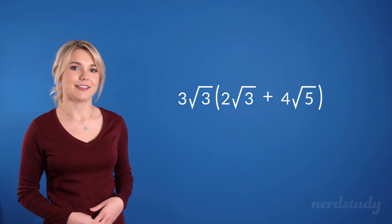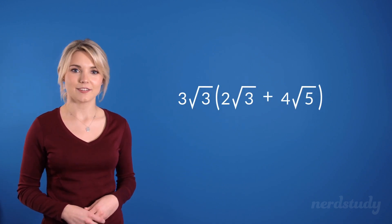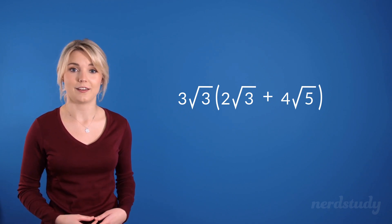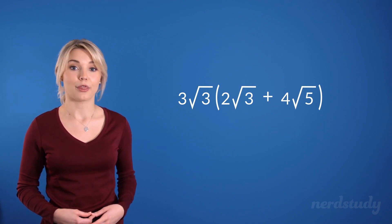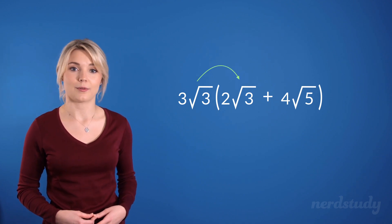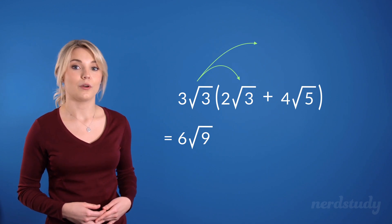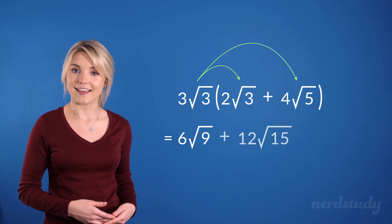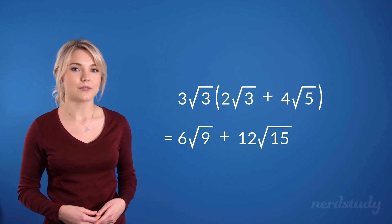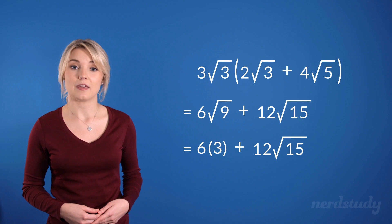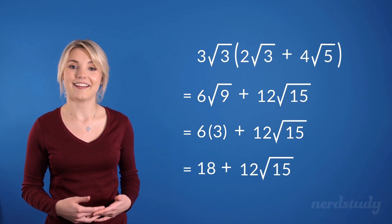So to finish this lesson off, let's try one last example together. Here is our example. In a situation like this, all we need to do is to use the distributive property as we normally would. So we multiply 3 root 3 with 2 root 3 to get this. And then we multiply 3 root 3 with 4 root 5 to get this. We also know that the square root of 9 is equal to 3, so this ends up equaling to 18. And there's our final answer.